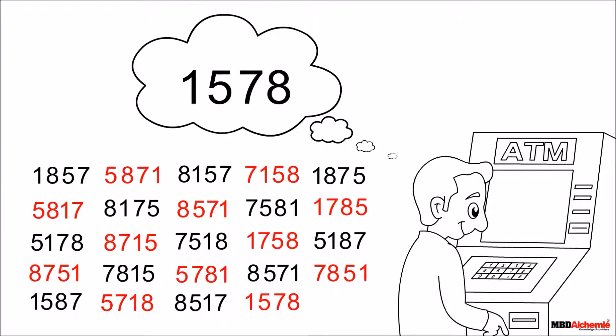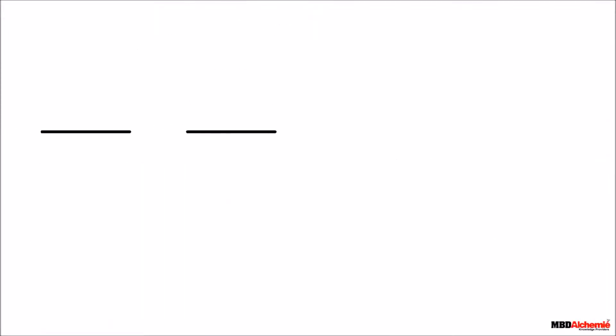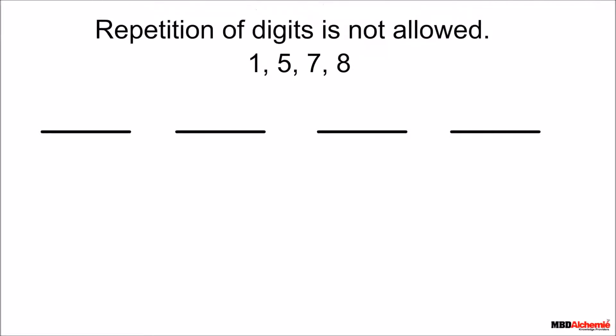He makes all the possible arrangements of the given numbers where the order is important. There are 24 ways of arranging these digits. Let us count. There are four places to arrange the numbers, keeping in mind that repetition of digits is not allowed.